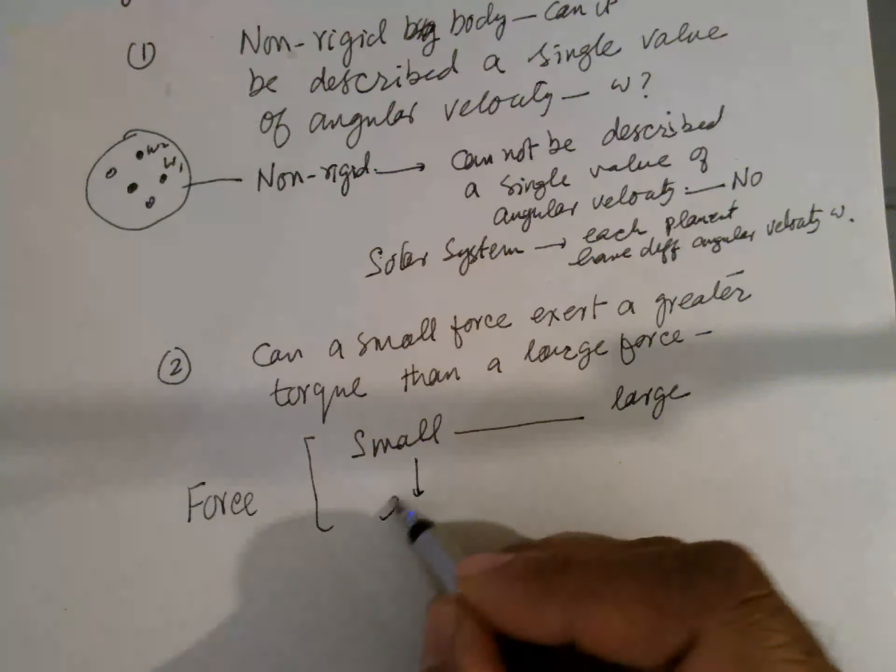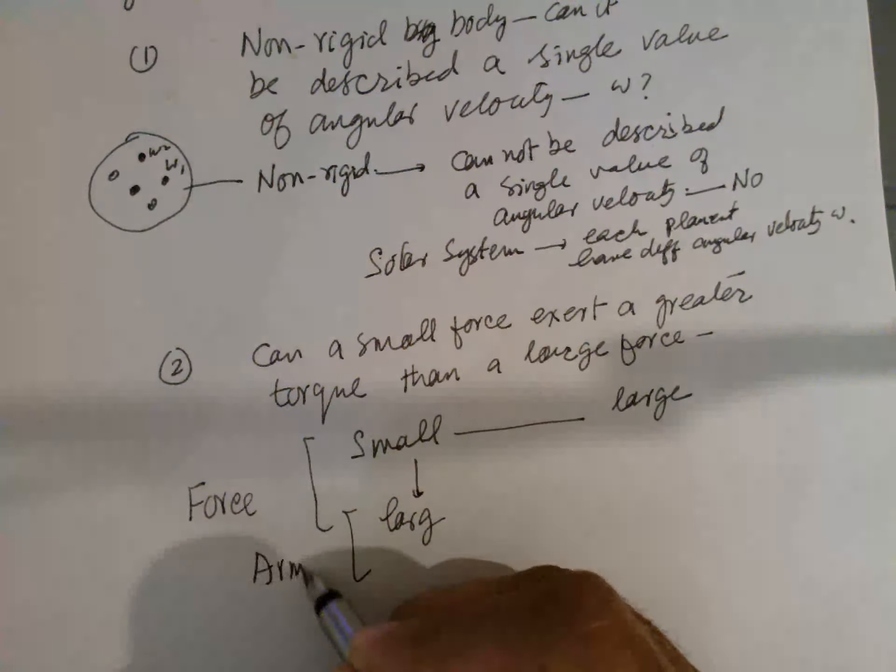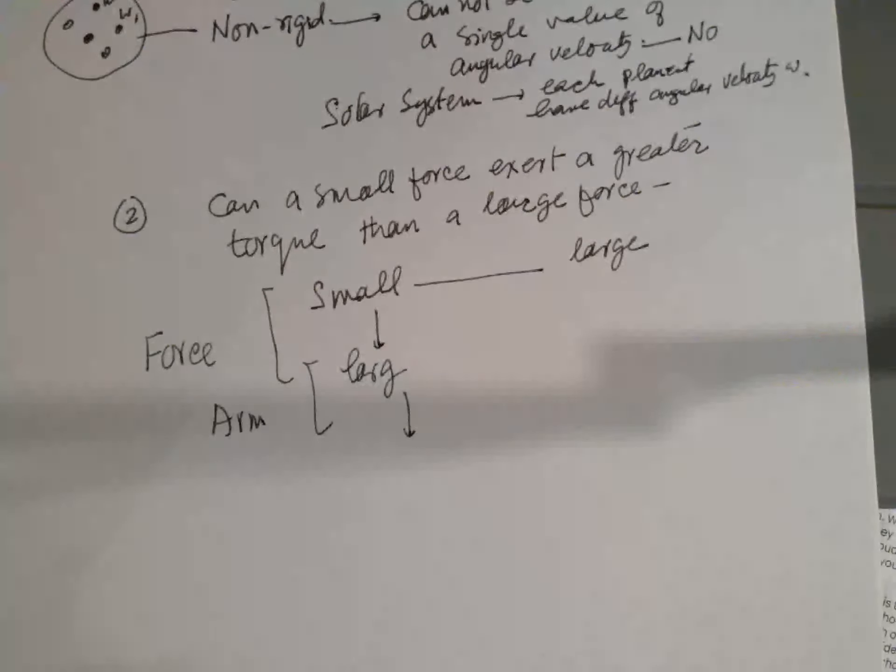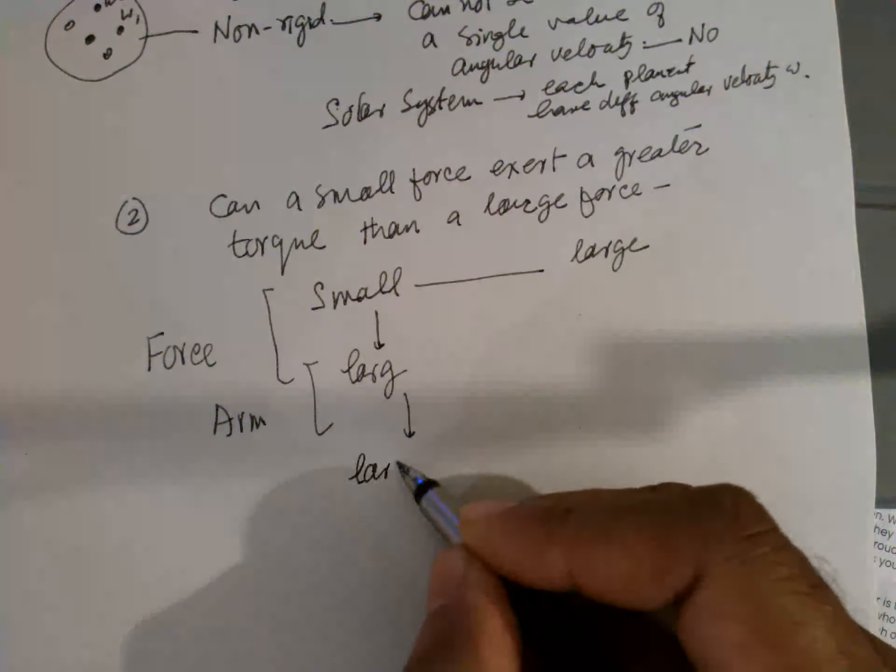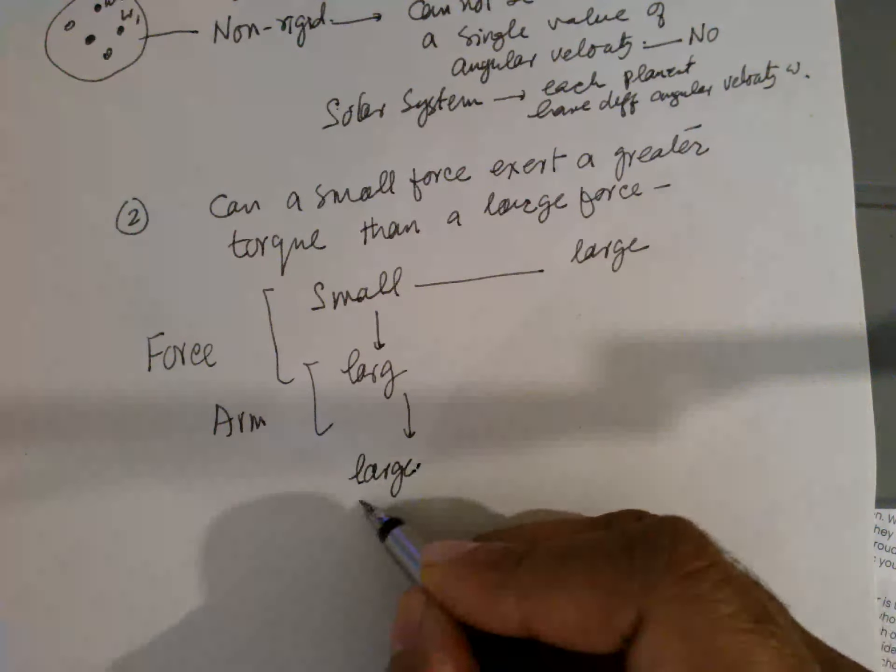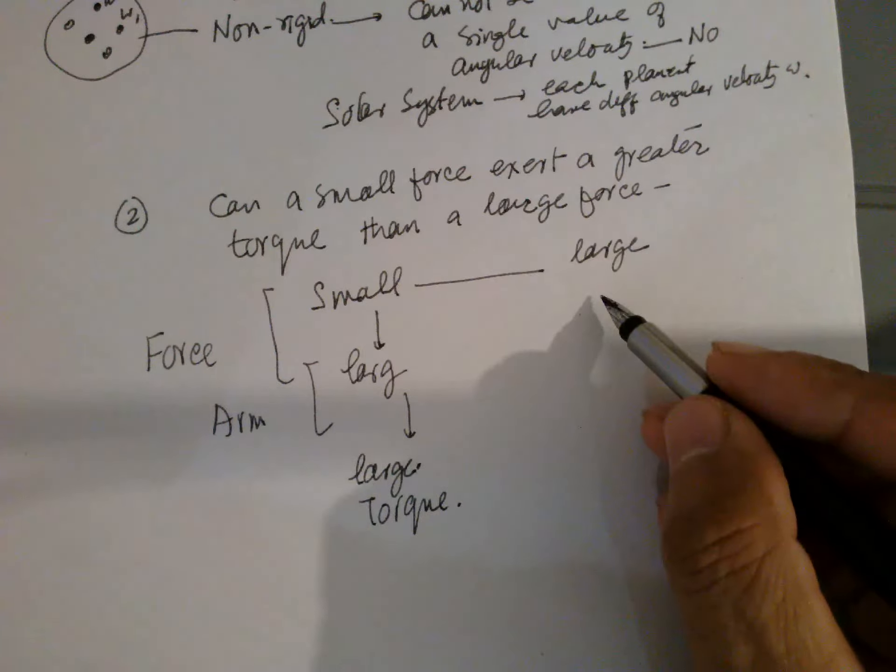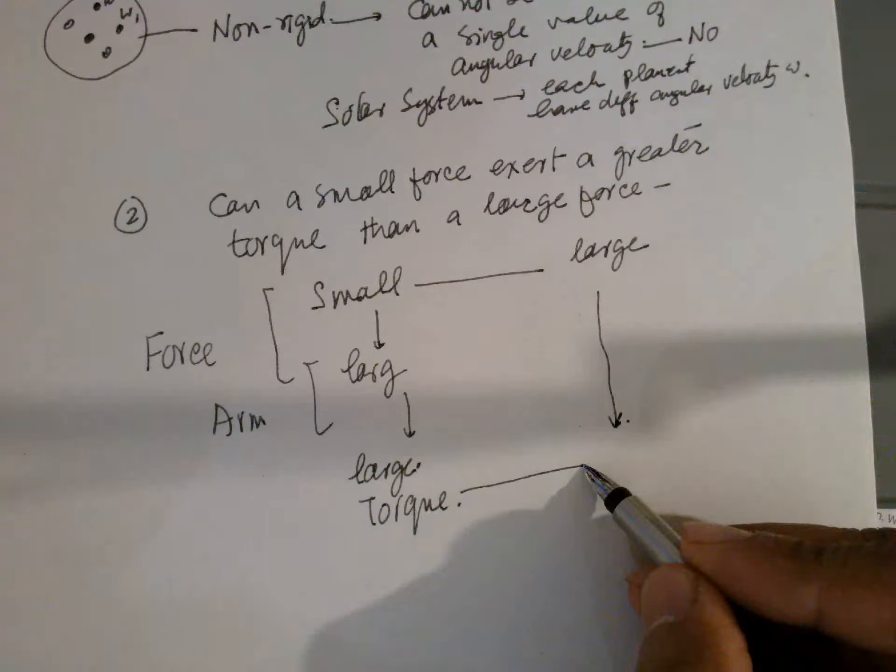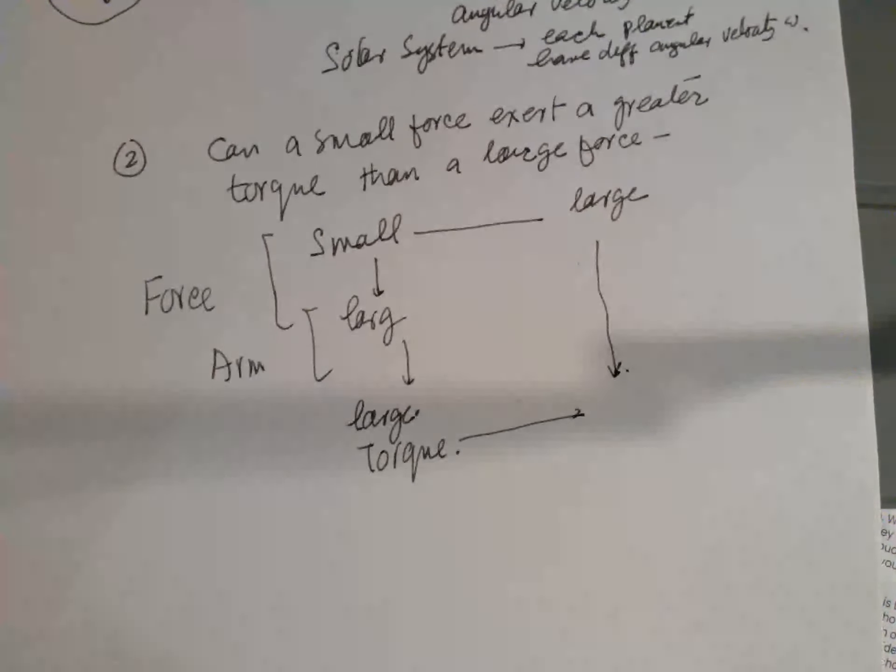A small force with a large arm will have a large torque, larger than a large force. So a small force can create large torque.